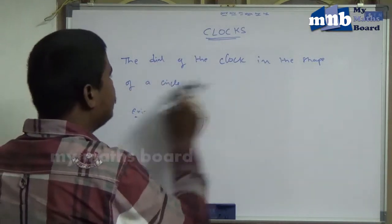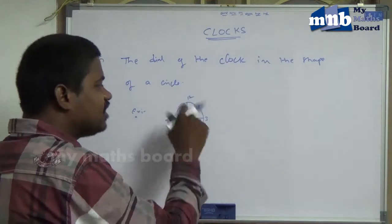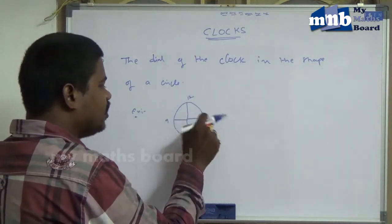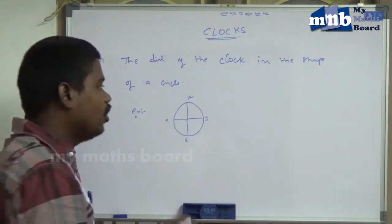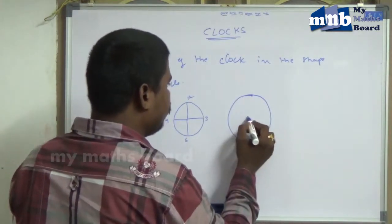The dial of the clock is in the shape of a circle. That means, the clock shape is a circle and it has 4 divisions: 3, 6, 9, and 12. The remaining clocks are also in the shape of circles.